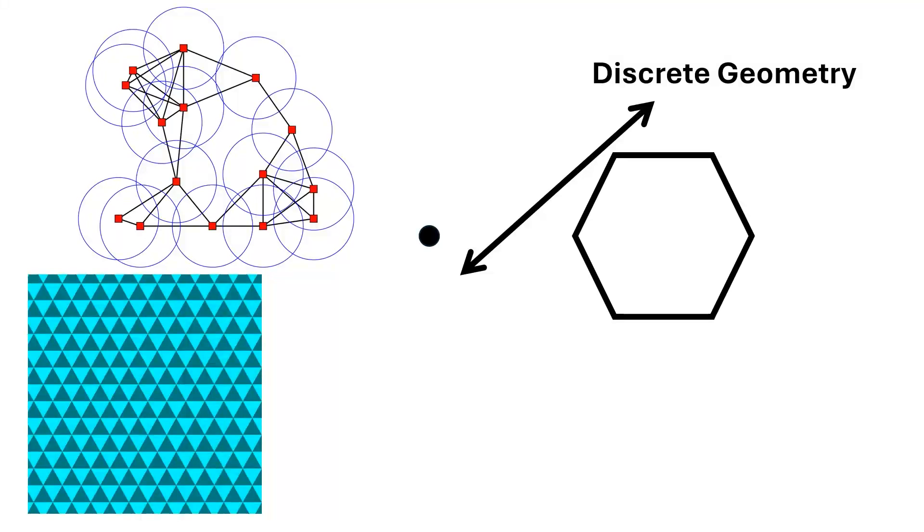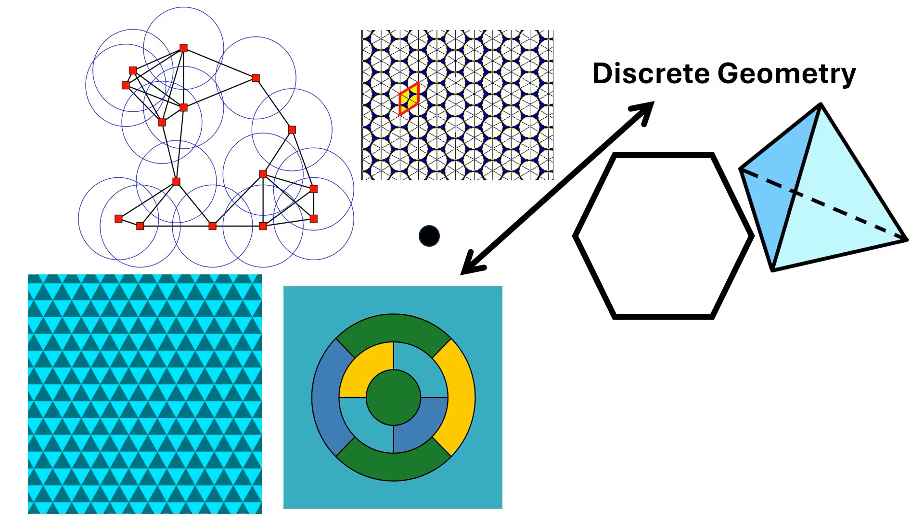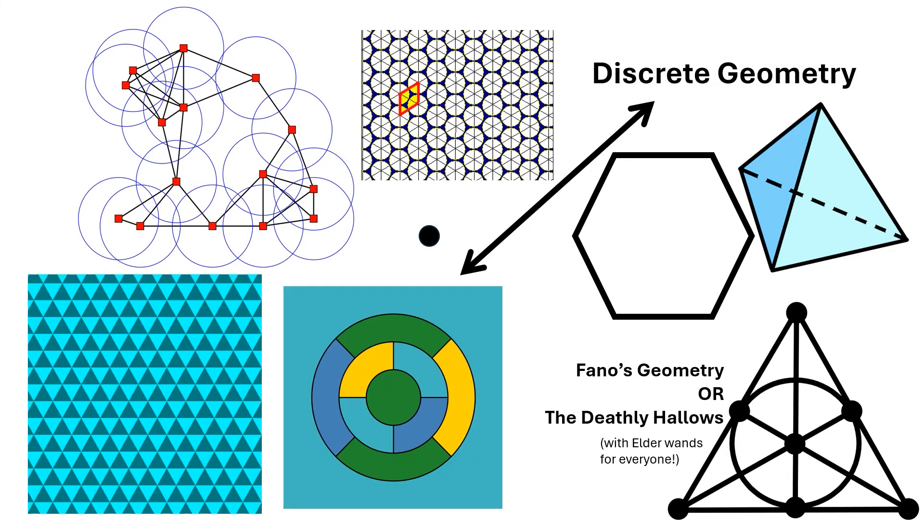Discrete geometry. Discrete geometry is the study of combinatorial properties of geometric objects. This mainly includes answering questions about finite sets of basic geometric objects, such as points, lines, or polygons. This includes tessellations of the plane, polyhedra, circle packings, map colorings, finite incidence geometry, and more.